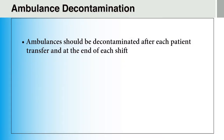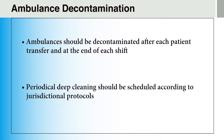Decontamination of ambulances and their equipment must take place after each patient transfer. After transferring the patient, the ambulance should be decontaminated outside of the ambulance bay, where you are not blocking incoming ambulance traffic at the receiving facility. If decontamination at the receiving facility is not possible, the ambulance should be brought back to the station and decontaminated there. Comprehensive decontamination may be scheduled periodically at the EMS station according to jurisdictional protocols. It is recommended to have a checklist for regular cleaning and clear communication regarding responsibilities and task division. Please note, ambulance decontamination protocols may vary in different jurisdictions.